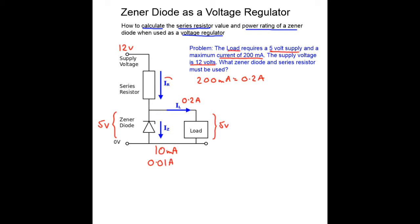So my question is what is the value of this resistor? What is the power rating of this diode? And we're going to calculate those things now.